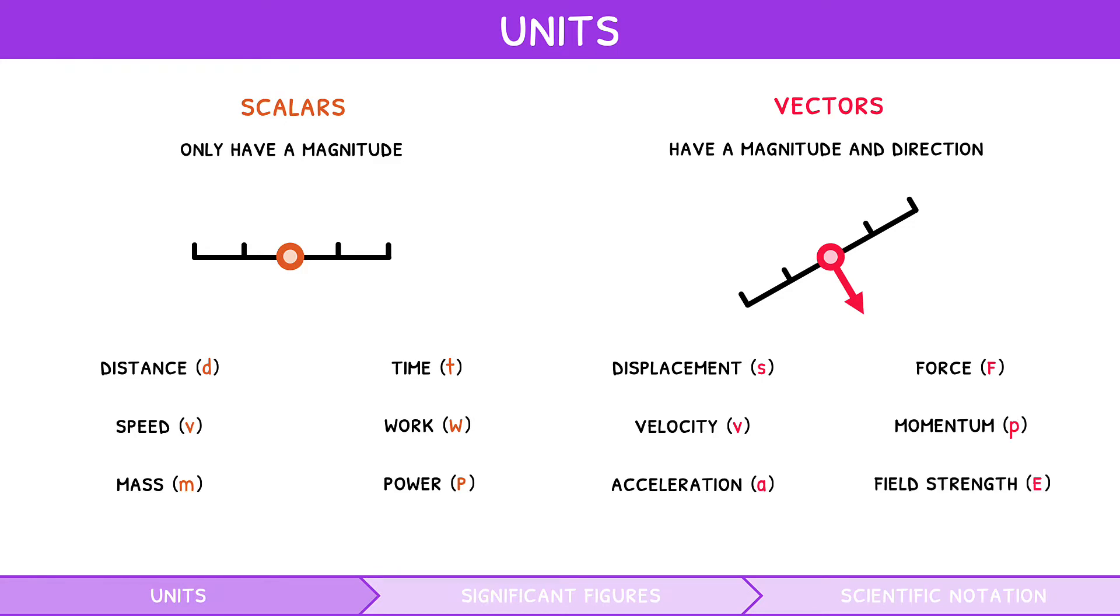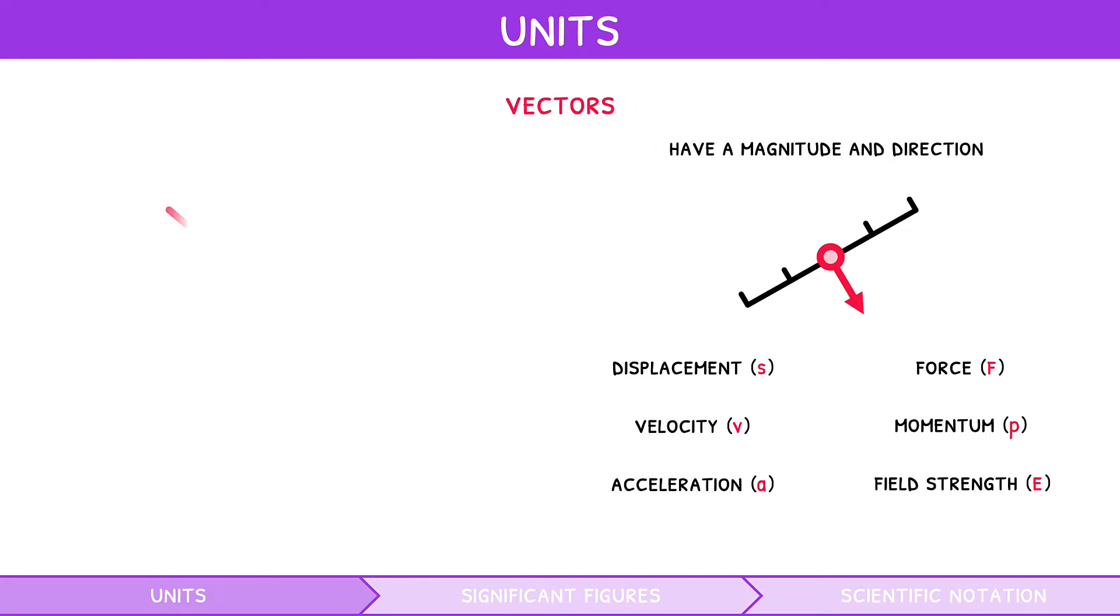Since vectors have a direction, they can be visualized in two dimensions with an arrow. This can then be broken down into its x and y components by the process termed resolving. This forms a triangle, wherein the different components can be calculated using sine, cosine, and tangent.